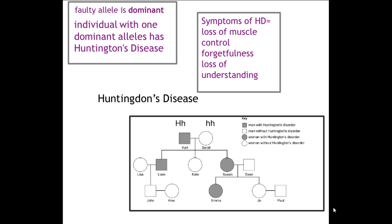We can then establish what all of the other offspring's genotypes are, and their partners' genotypes as well. We can see that Lisa, because she is healthy, must have both healthy alleles — small h, small h. Liam, because he is a sufferer but because Sarah is his mother, he must have at least one healthy allele, so he is big H, small h. Kate is healthy — small h, small h. Susan must be a sufferer but also must be heterozygous — big H, small h. And Sean, obviously because he is healthy, has both recessive alleles — small h, small h.